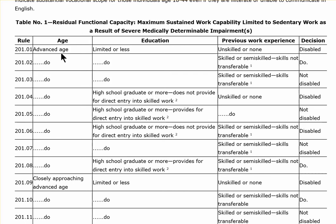I think advanced stage is 55 and older. Then it'll have ranges for the 40s and 45s and gives you your likelihood of winning on the grid rules. It's important to see what range you fall in terms of age, as well as your education, your previous work experience. The likely decision is in this column here, and this is actually what disability judges use — I saw my judge refer to this when I was in court.